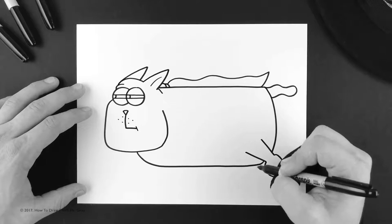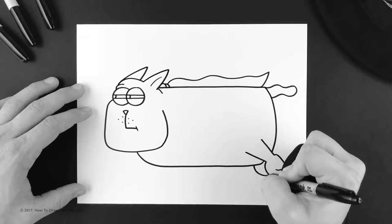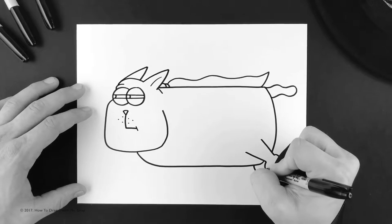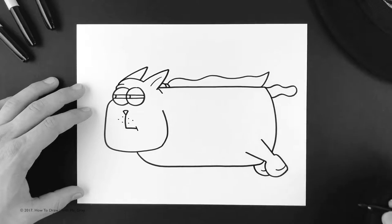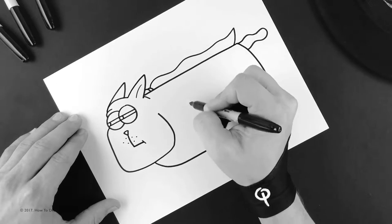Now we're going to go back to the back and we're going to put in his other paw peeking out in the background. And then you can do his little toe.